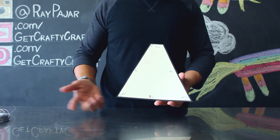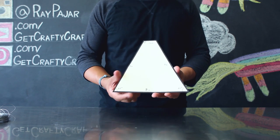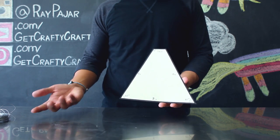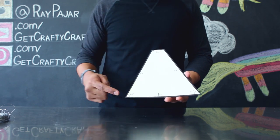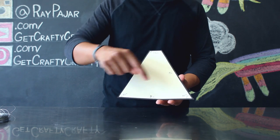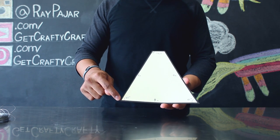First you want to draw the template for your horn. On a piece of cardboard, draw out these measurements so that you can create your horn. It's 8 inches on the bottom, 65 degrees on the bottom two corners, 8 inches up.